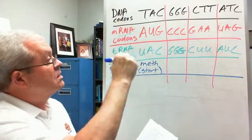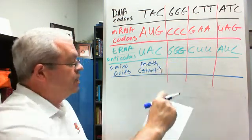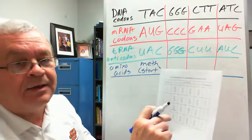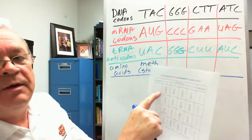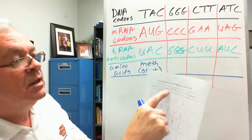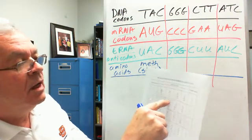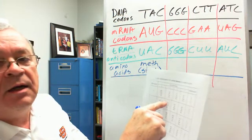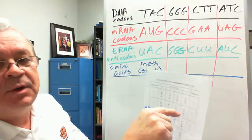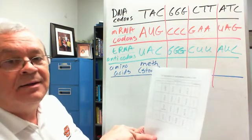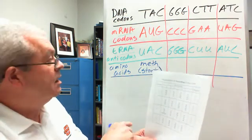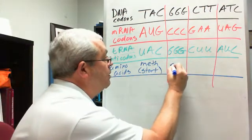Then, what is the second anticodon? GGG. I think we did that in our little practice explanatory video. Well, let's do it again. We have first base G right here, second base G right here. And that brings us to this box right here. And does it make any difference what the third base is? Everything in that box is what? Oh, my goodness. PRO.